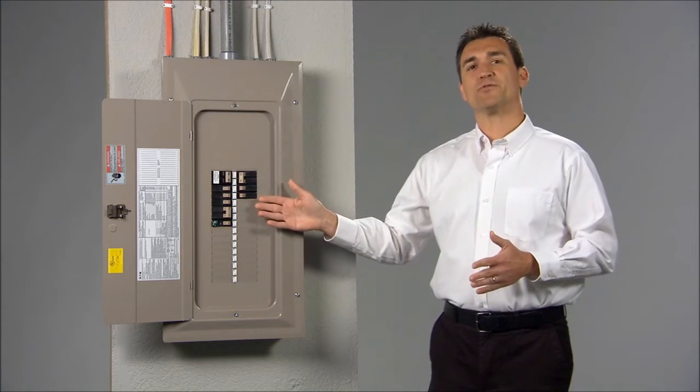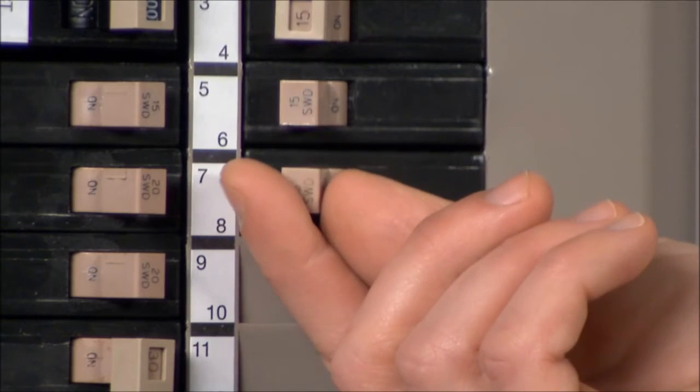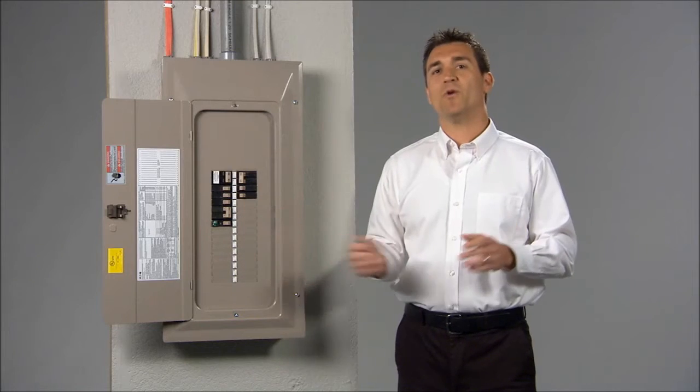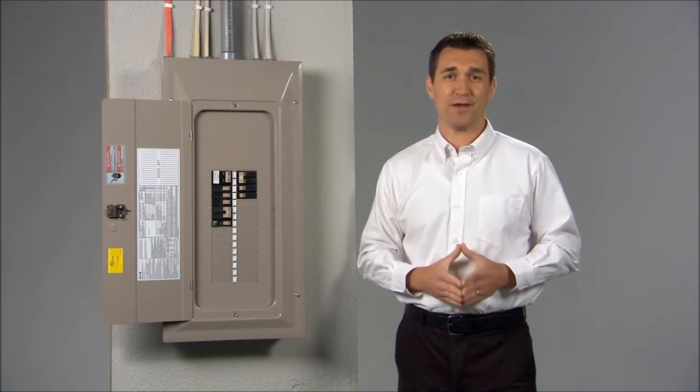If a circuit breaker trips, try to reset it by turning it to the off position, and then back to the on position. Do this only once. This is important. Don't keep resetting a circuit breaker.